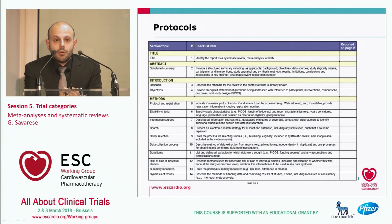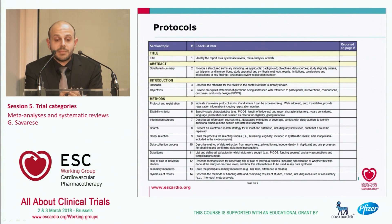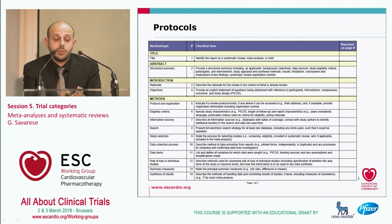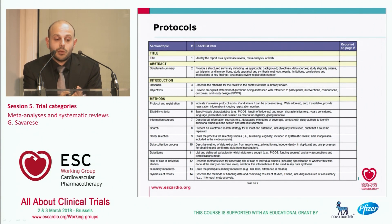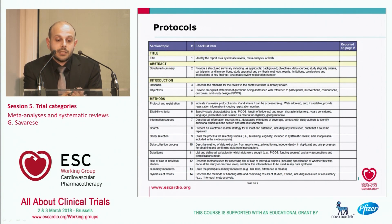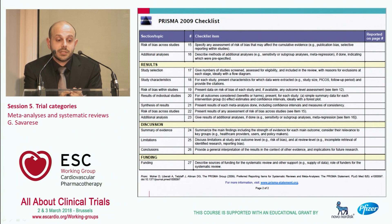Meta-analyses also have their protocols. PRISMA, similar to STROBE and CONSORT, provides a checklist of all aspects that should be considered when writing a meta-analysis or systematic review. It is very helpful because it provides guidance on how to write the background, methods, inclusion and exclusion criteria, literature search, statistical methods, results, and discussion.